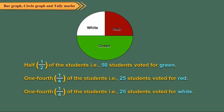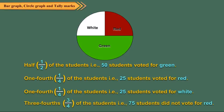One-fourth of the students, i.e., 25 students, voted for white. Can you find how many did not vote for red? Clearly, three-fourths of the students, i.e., 75 students, did not vote for red.